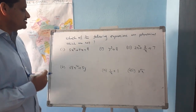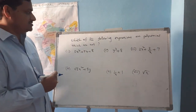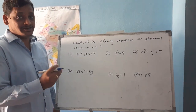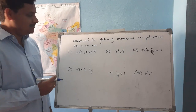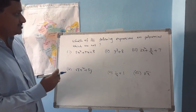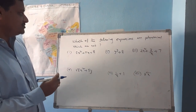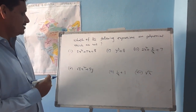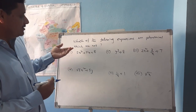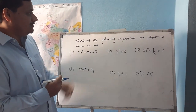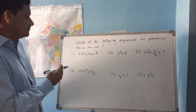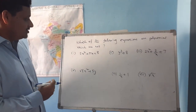In the previous class, we discussed about polynomials and the degree of a polynomial. Now we will discuss some examples for polynomials — specifically, which of the following expressions are polynomials and which are not.